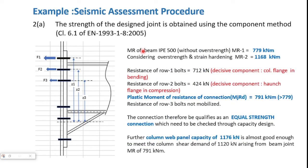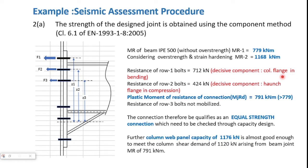Going to step 2, we need to find the strength of the design joint using the component method, specifically following the guidelines of clause 6.1 of EN1993-1-8:2005. For the connecting beam IPE-500, its plastic moment of resistance is computed to be 779 kNm without consideration of overstrength. Considering overstrength and strain hardening, the moment of resistance is 1168 kNm. The strain hardening factors and material overstrength are taken from the Eurocode. A component-by-component analysis is carried out. It is found that the row 1 bolts have a resistance of 712 kNm, governed by the column flange in bending.